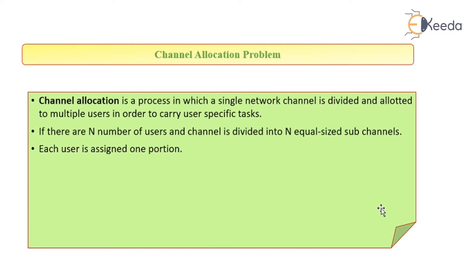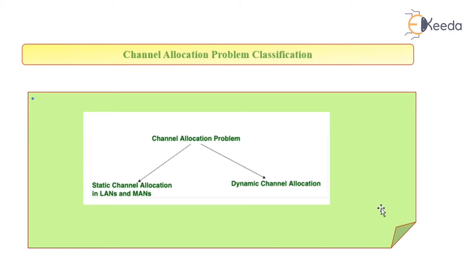If there are n number of users, the channel is divided into n equal-sized sub-channels. Each user is assigned one portion. There are two types of channel allocations: one is static channel allocation, and another one is dynamic channel allocation.